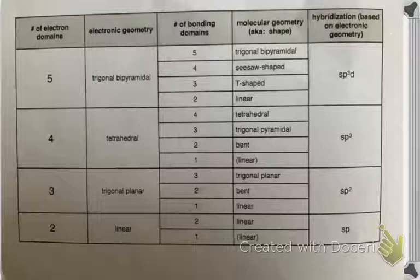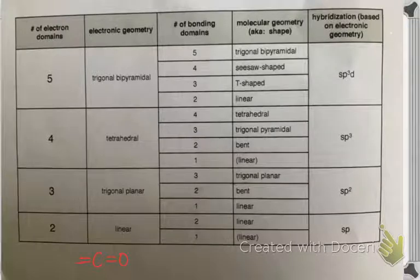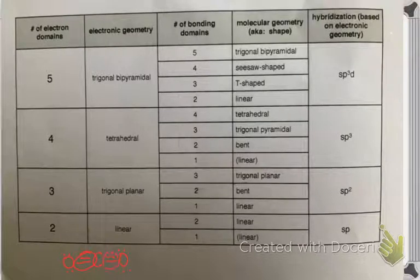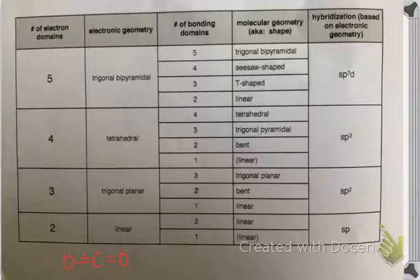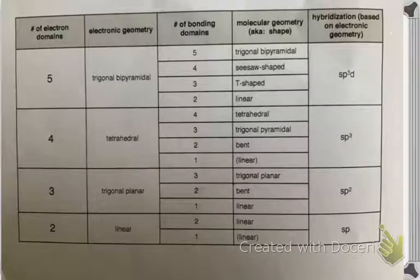You probably can know what the answer is without me telling you. If you have two domains, that's a linear geometry. Carbon dioxide — you have the Lewis structure drawn. The carbon has two domains around it. Each of those double bonds is a domain. They take on a linear electronic geometry and the molecule itself is linear. The angle between those bonding areas is 180 degrees.